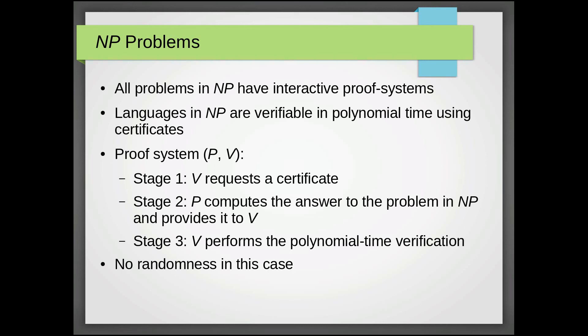It's interesting to note that actually if interactive proof systems did not have this random tape, this class of languages recognized by them, which we can denote as IP, would actually equal the class of languages NP. So if there is no randomness in this system, NP equals IP.